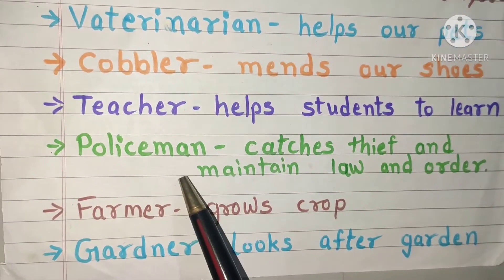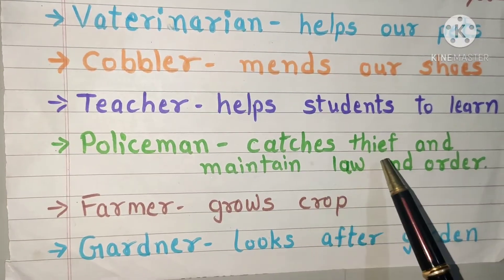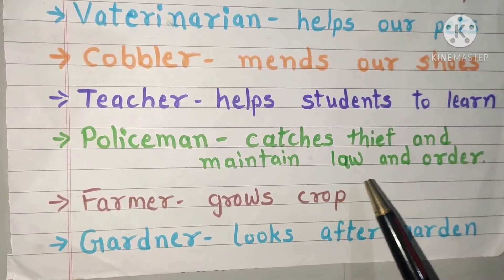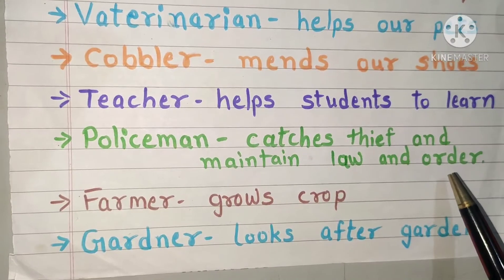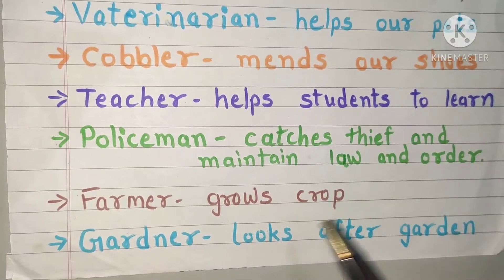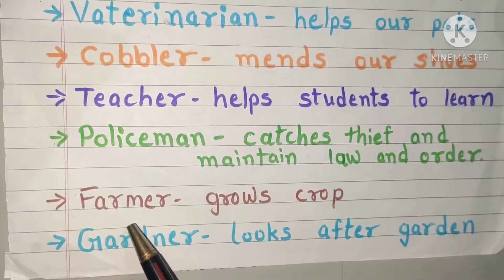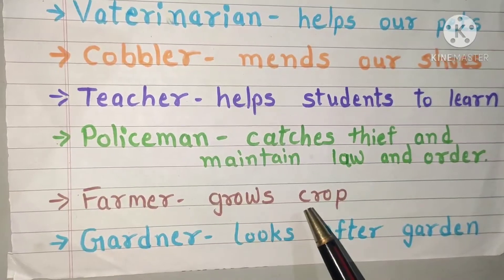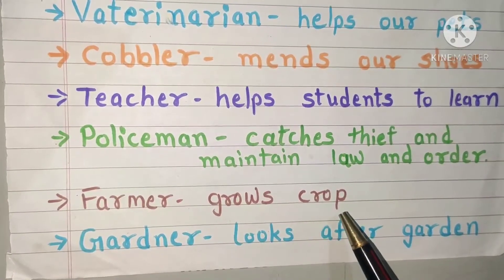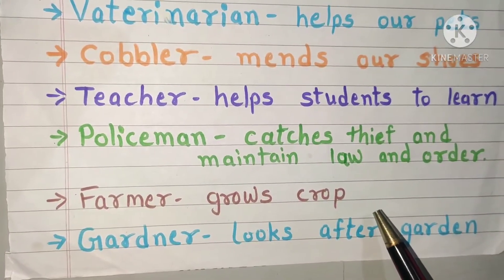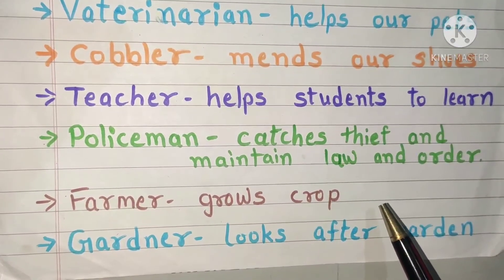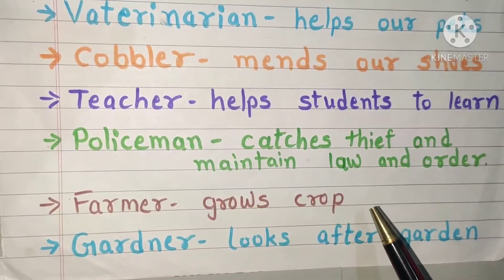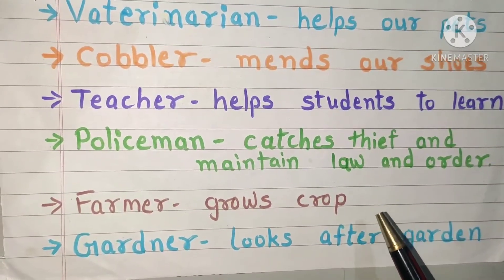Policeman catches thieves and maintains law and order in the community. Farmer grows different crops for us — different food grains like wheat, rice, bajra, etc.